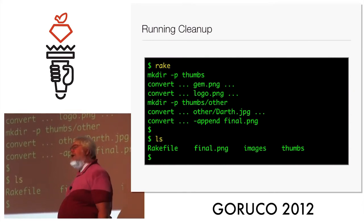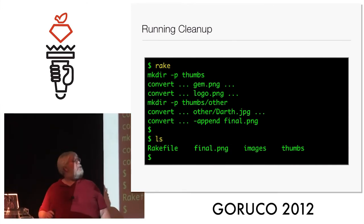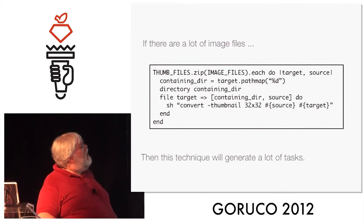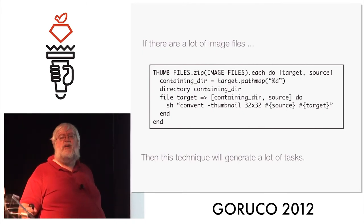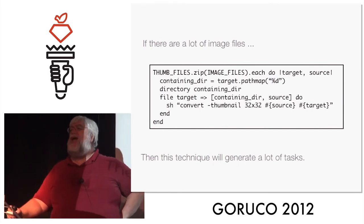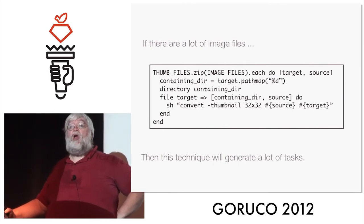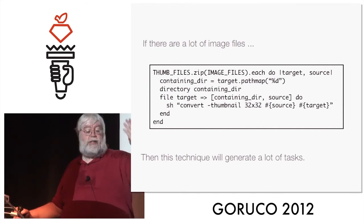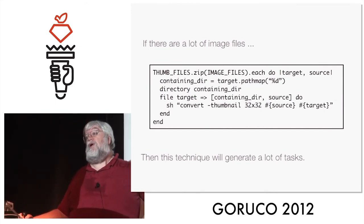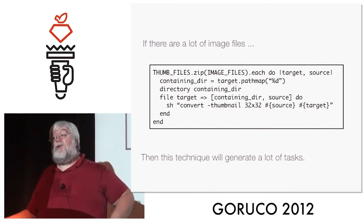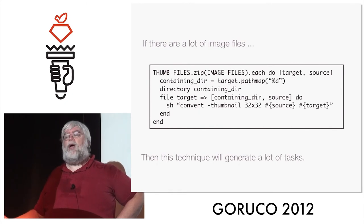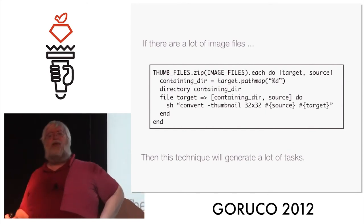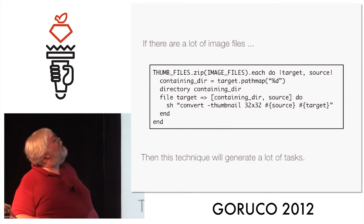Since people want to know about rules, let's talk about rules. If there are a lot of image files you will get a lot of dynamically generated tasks once you run — you can get a list of all the tasks defined in your Rake system by saying `rake -P` and it'll dump out the dependency tree for you. If there are a lot of image files it'll take some time to build up that tree. Certainly compared to loading a Rails environment that's probably trivial, but it might be important if you've got a lot of files and want this to run really fast. So there's another way to do this.